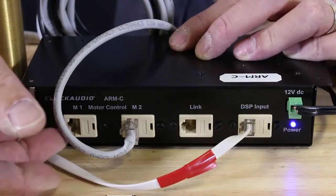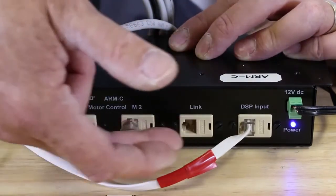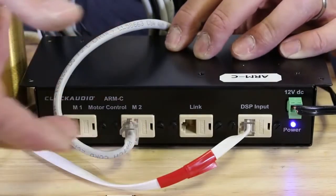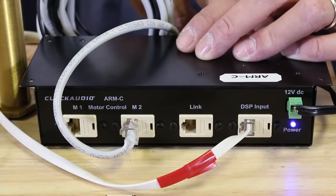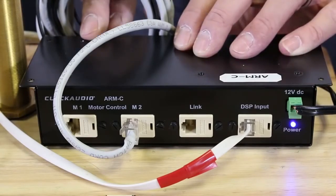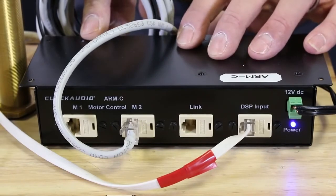There are several Cat5 RJ45 connectors. There's an M1, M2. These are both motor connectors for two microphones on the front. There are two additional connectors on the back for a total of four microphones able to be controlled out of each ARM-C.